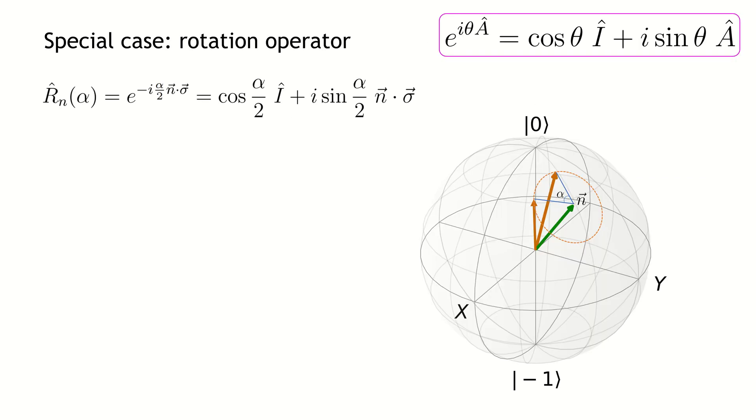One important use of this formula is to calculate the rotation operator. The rotation operator rotates a Bloch vector shown by the orange arrow around the axis N defined by the unit vector shown by the green arrow by angle alpha.